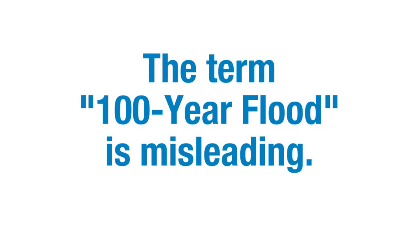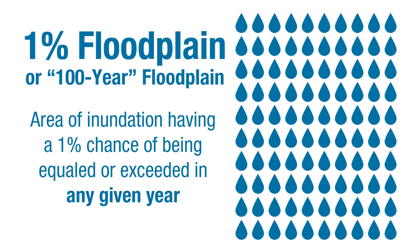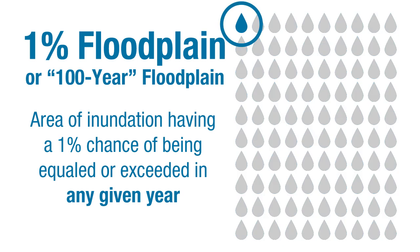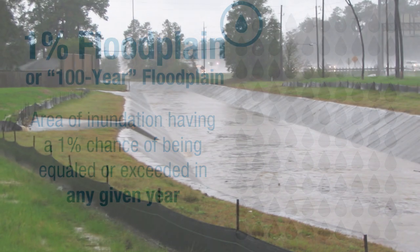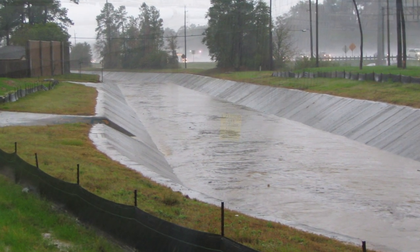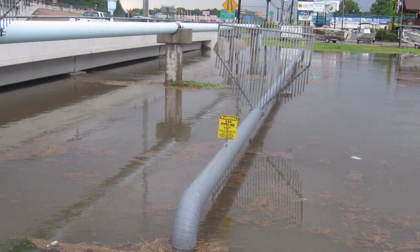The term '100-year flood' is misleading. The 1% floodplain, or 100-year floodplain, represents an area of inundation having a 1% chance of being equaled or exceeded in any given year at a given location. It does not mean that if a 1% flood event does occur, another 1% flood event will not happen for 99 years.